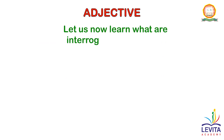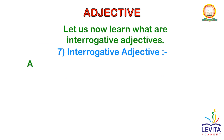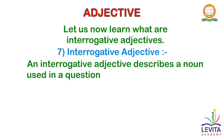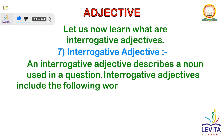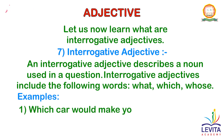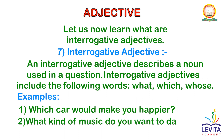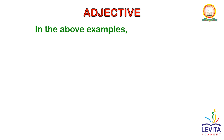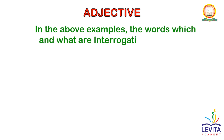Let us learn what interrogative adjectives are. An interrogative adjective describes a noun that is used in a question. Interrogative adjectives include the following words: what, which, and whose. Examples are: Which car would make you happier? What kind of music do you prefer to listen to? In the above examples, the words which and what are interrogative adjectives.